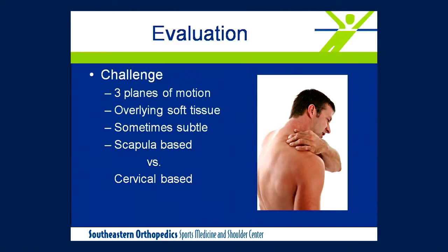The challenge of evaluating scapular dyskinesis is present for a number of reasons. The scapula moves in three different planes with all kinds of muscles surrounding it and overlying soft tissue, which makes it difficult to visualize the scapula and any subtle inconsistencies with normal scapular kinematics. It's imperative that any individual you suspect of having scapular dyskinesis has their shoulder exposed — female patients in a gown or sports bra, male patients with their shirt off.